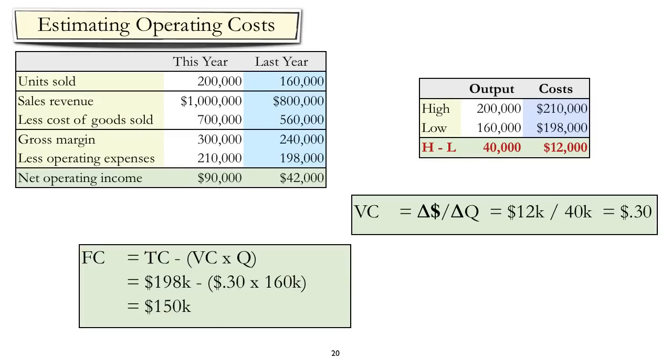We can now substitute into the total cost equation, and this time we'll use the low observation. So, total cost is equal to $198,000. Variable cost per unit is equal to $0.30. And the number of units is equal to 160,000. When we tidy up the math, we see the estimate of fixed cost is equal to $150,000.